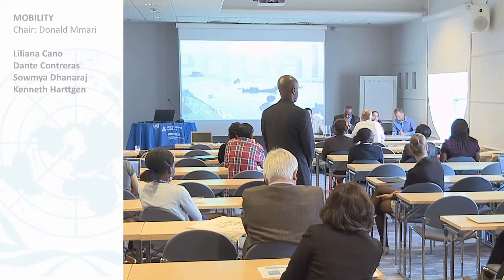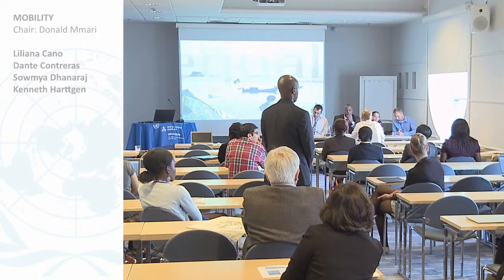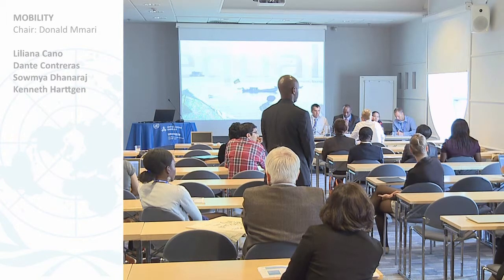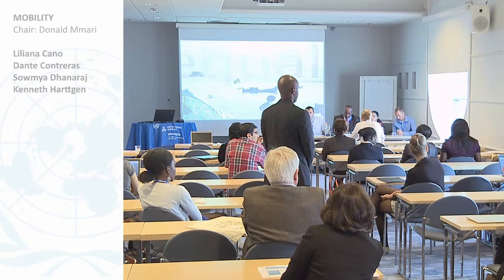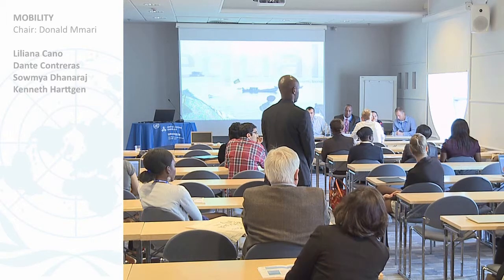In the graph that you showed, there was a dip in the probabilities to stay in the top around 2007 or so. Do you have some idea of what is happening there in top income mobility?